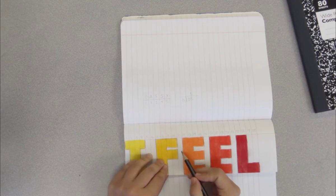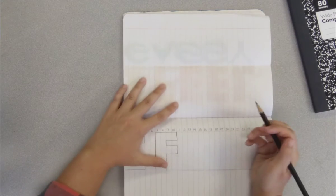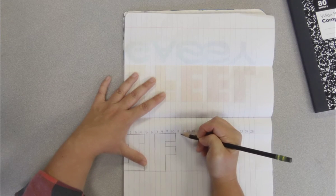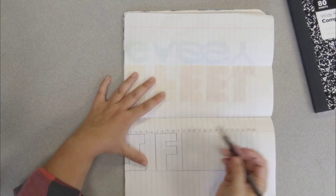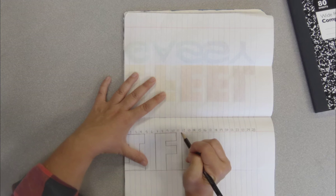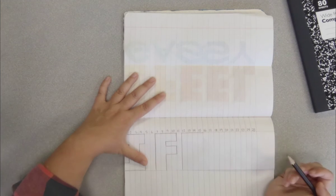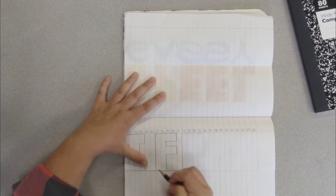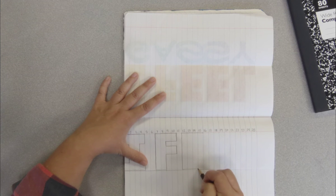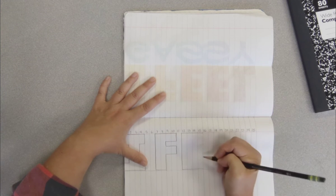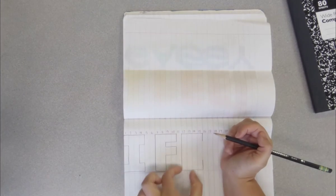So I have I, two spaces, F. Now I want to leave spaces between each of my letters in the word feel, so I'm gonna skip over column number 11 and between 11 and 12 start creating my E. And again, four spaces wide.